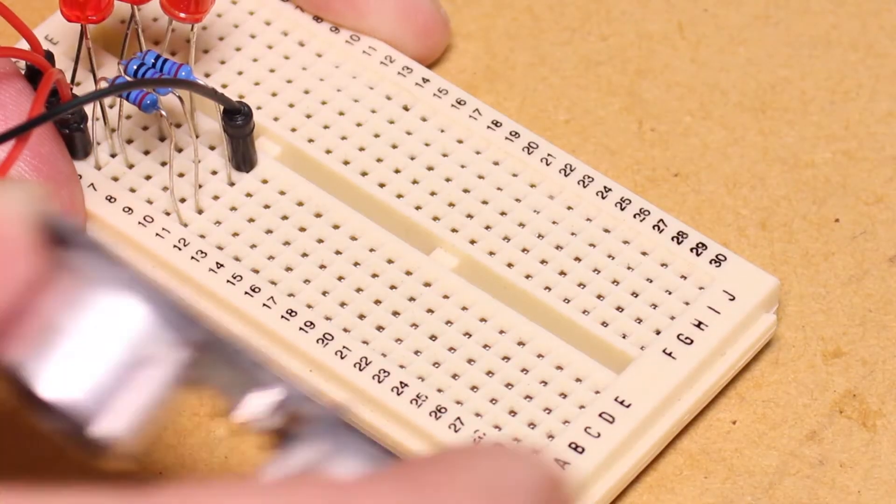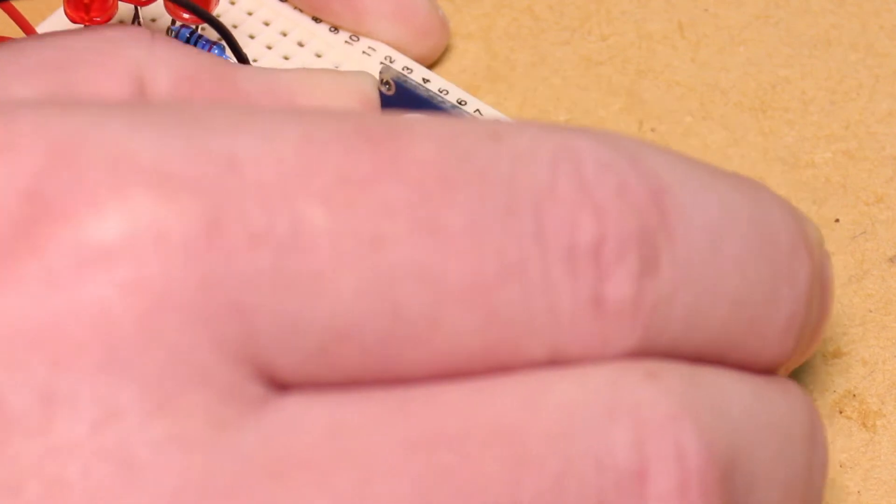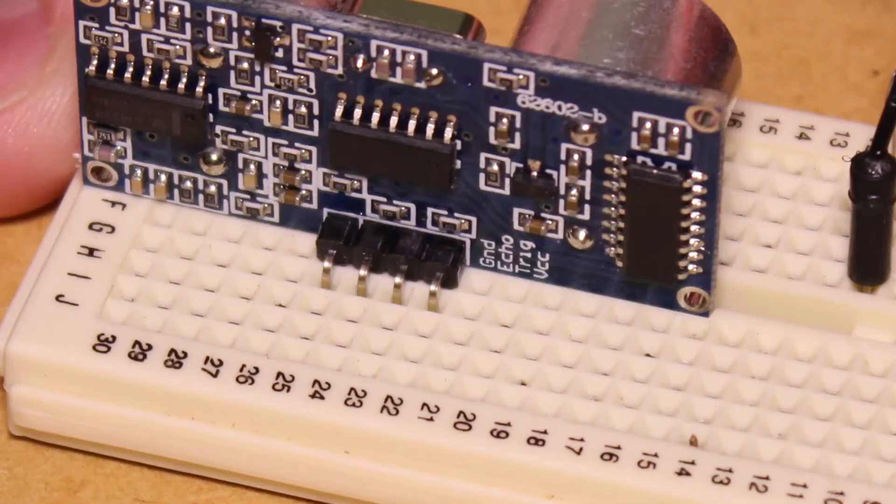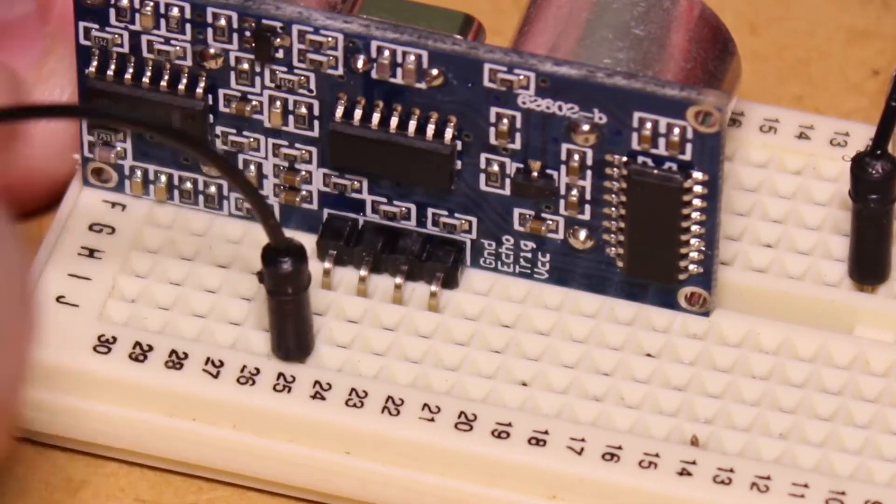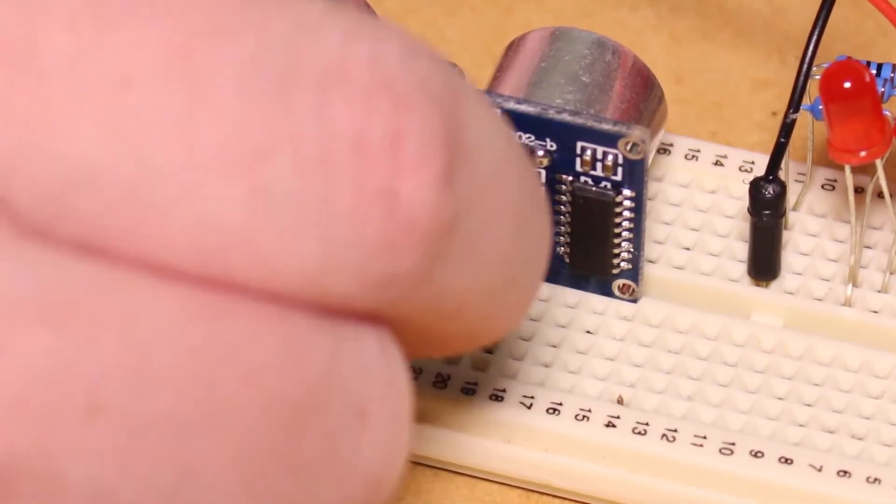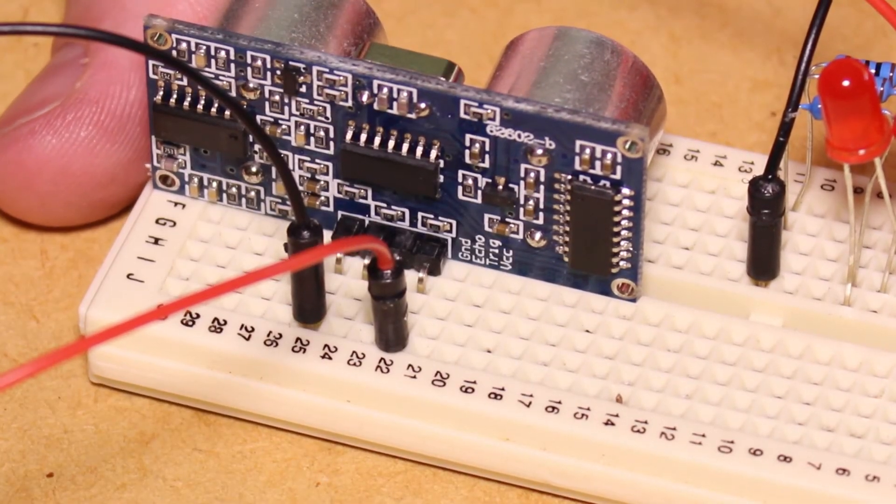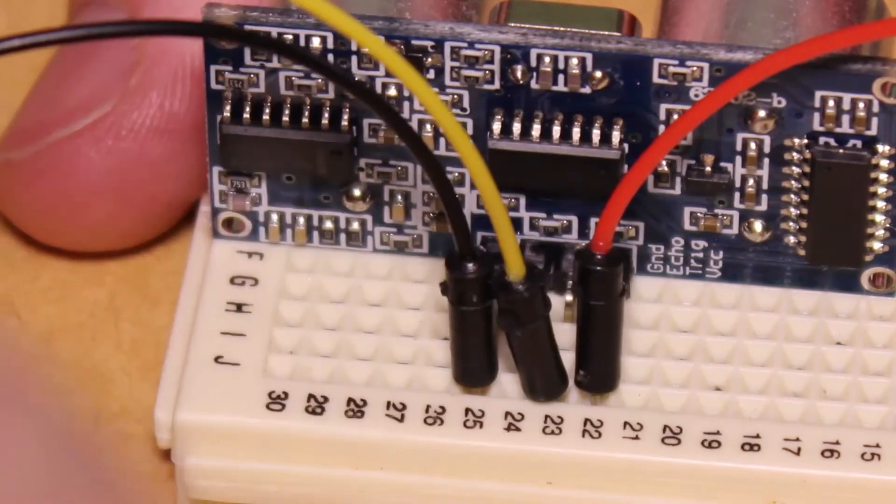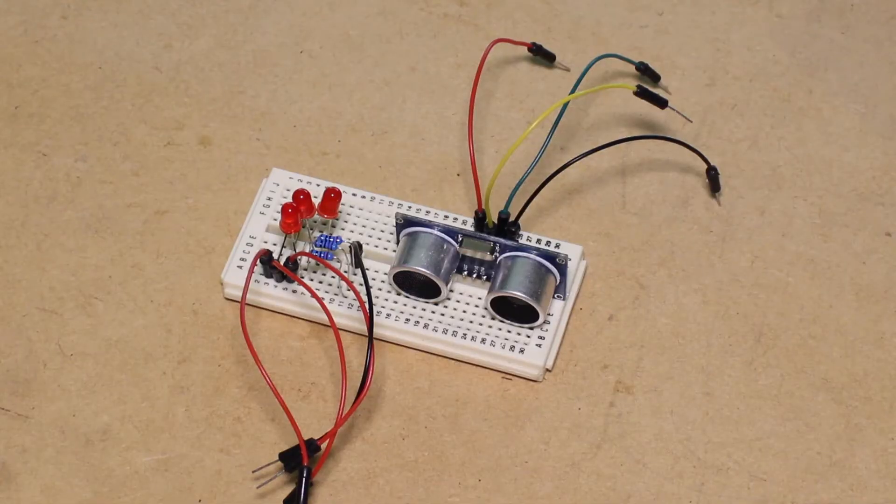We can then insert the sensor into the breadboard, connecting the ground pin to ground on the Arduino, the VCC pin to 5 volts on the Arduino, the trigger pin to pin 13 on the Arduino, and the echo pin to pin 12.